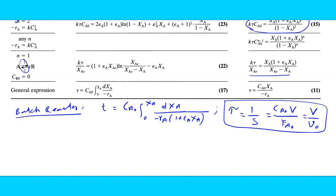For a batch reactor, the performance equation is: T = CA0 · ∫₀^XA dXA / [(−rA)·(1 + εA·XA)]. Space time τ = 1/S = V/V0 = CA0·V / FA0. If you want to calculate the volume of a batch reactor, you use the known values of concentration, initial concentration, and feed rate FA0 to find τ or the volume.